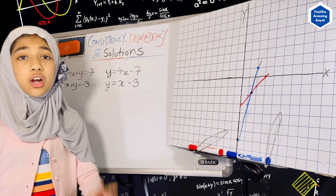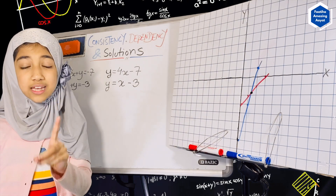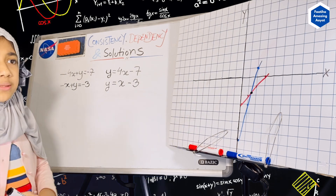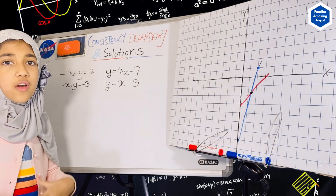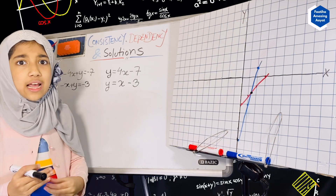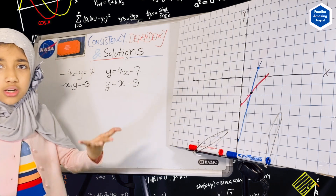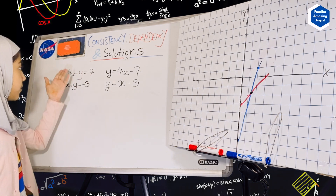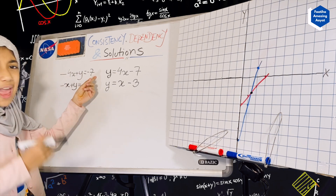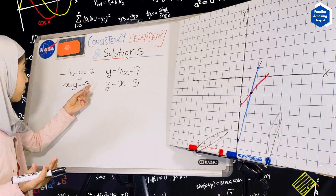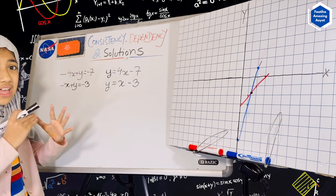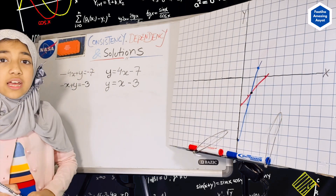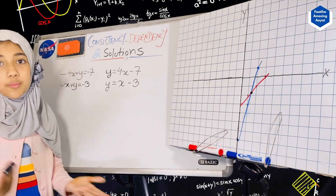Consistency has two parts: one part is consistent, and the other one is inconsistent. Consistent is basically when you can multiply all the variables of one equation and find that it's the same as another equation — like if we multiplied one equation by any number and got the exact same thing as the other equation. Inconsistent is the complete opposite.